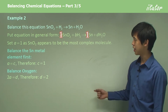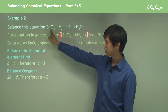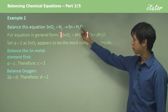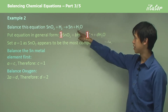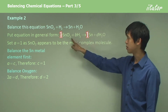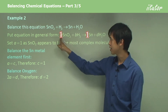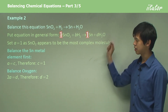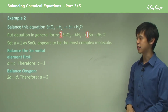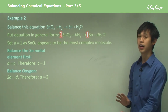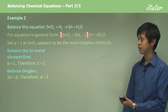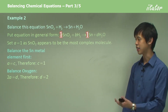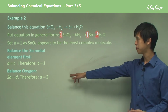So we balance oxygen next. There are two oxygens on the left-hand side and D on the right-hand side. So 2A on the left must equal D on the right. We know A is 1, so D must be 2.